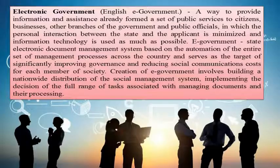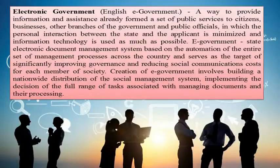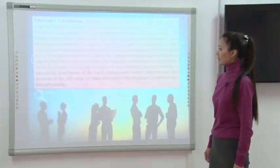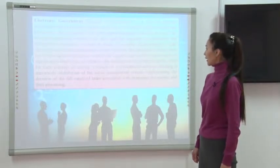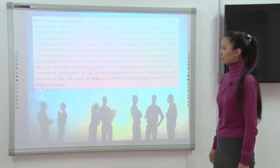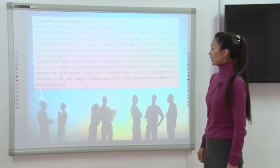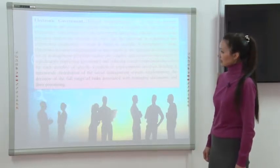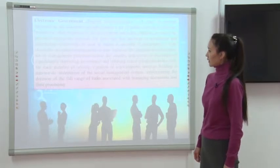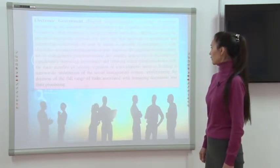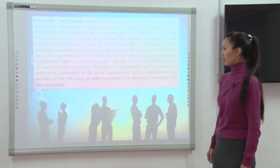Electronic government is a way to provide information and a formed set of public services to citizens, businesses, branches of government, and public officials, in which personal interaction between the state and the applicant is minimized and information technology is used as much as possible. The e-government state electronic document management system is based on the automation of management processes across the country, serving as a target for significantly improving government efficiency.